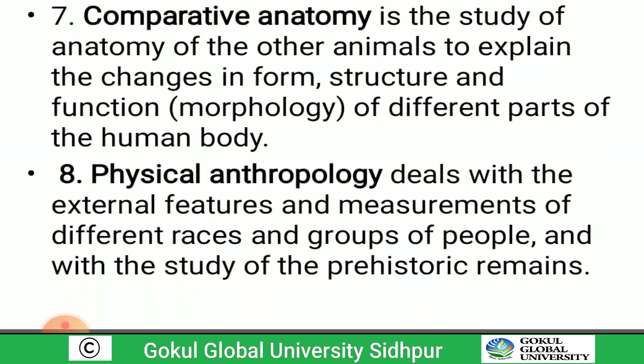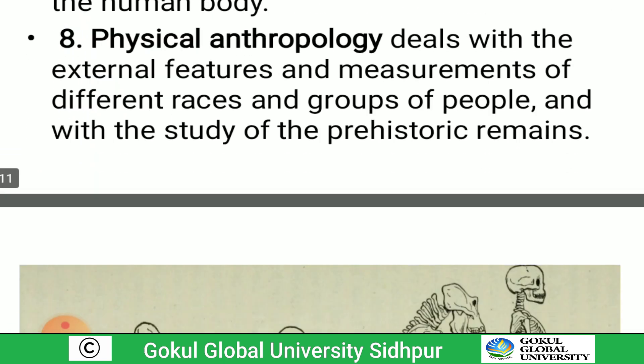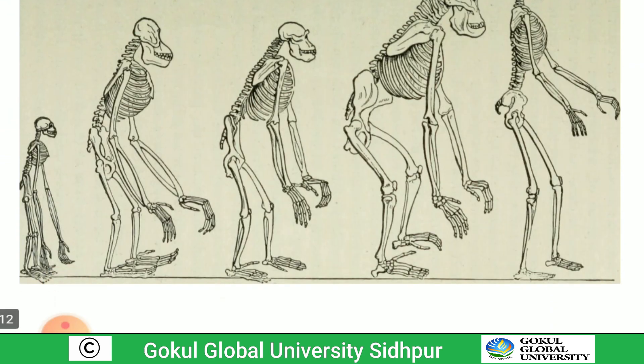Comparative anatomy is the study of anatomy of other animals to explain changes in form, structure, and function of different parts of the human body — for example, comparing humans to other animals. Physical anthropology deals with the external features and measurements of different races and groups of people, and with the study of prehistoric remains. For example, Americans are taller than Indians. This diagram shows the phylogeny.